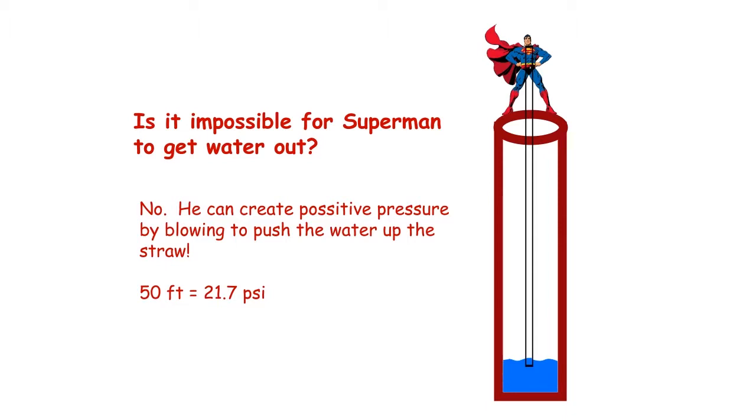All he needs to do is blow down inside of the well hard enough to generate at least 21.7 PSI of pressure, and the water will come spilling out of the top of the straw.